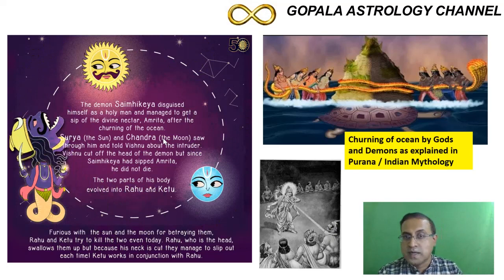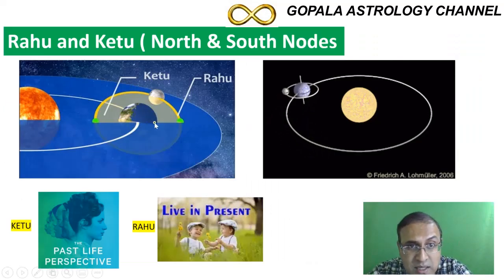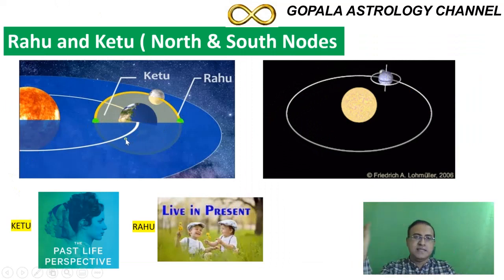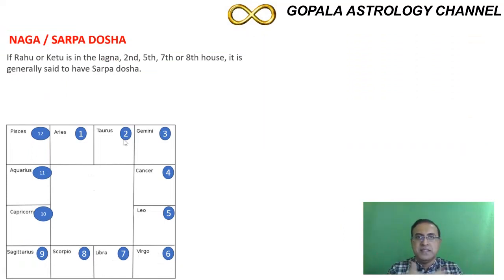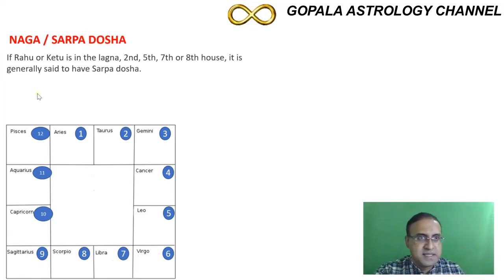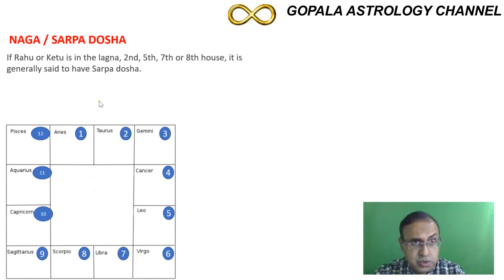I go by signs and explained Rahu and Ketu scientifically. Whenever these two nodes are present, they always form a clear sheet of magnetism around the Earth. With that background, let's understand Naga Dosha before Kala Sarpa Dosha. Many people ask me about the difference between Naga Dosha and Kala Sarpa Dosha. Naga Dosha and Sarpa Dosha are essentially the same term — 'Naga' and 'Sarpa' both mean snake in Sanskrit. Naga Dosha occurs when Rahu or Ketu is present in the lagna (ascendant), second house, fifth house, seventh, or eighth house.